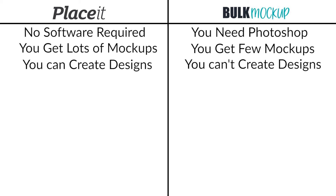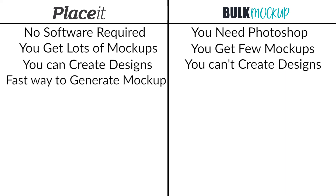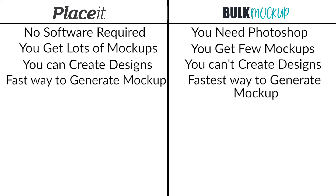You can also hire a designer to create a t-shirt design for you. No doubt, Placeit is a very fast way to generate mockups, but to generate mockups from Placeit you have to be there all the time. On the other hand, Bulk Mockup is the fastest way to generate mockups — there are no other tools out there in the market which can create mockups as fast as Bulk Mockup can. Once you set up your files and folders, you are good to go and you don't have to do anything once you start the process.